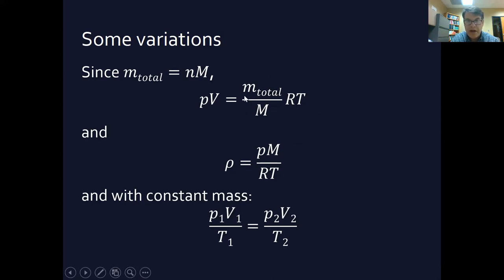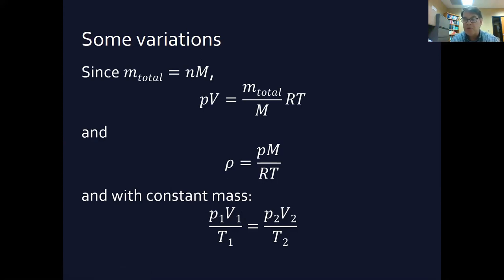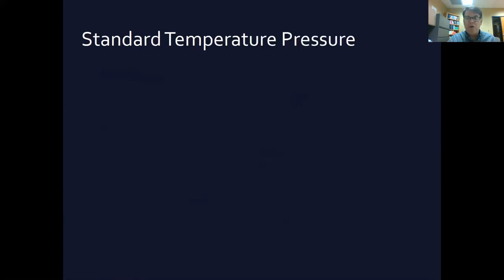With constant mass, n, R, and M are all constant, so dividing PV = nRT by T gives PV/T = constant. This means for any state, P₁V₁/T₁ = P₂V₂/T₂. If you increase pressure, you must either increase temperature or decrease volume to keep the ratio constant. These are interesting variations on the PV = nRT equation.